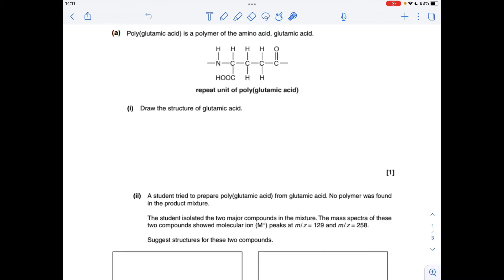Okay, so for part A we've just got to turn this repeat unit into the monomer glutamic acid. All we need to do is put an H on here, turn that into an NH2 group, and put an OH there to turn that into a carboxyl group.